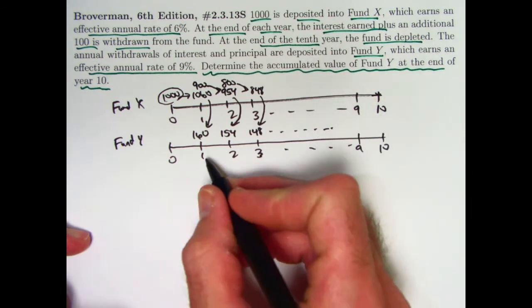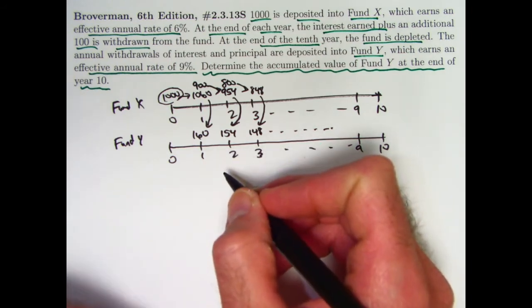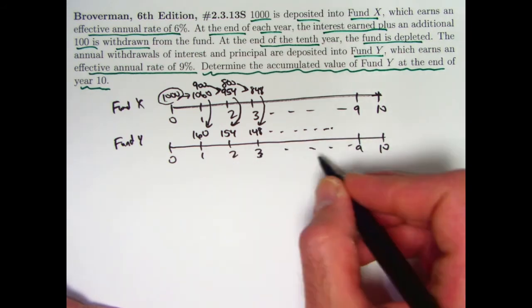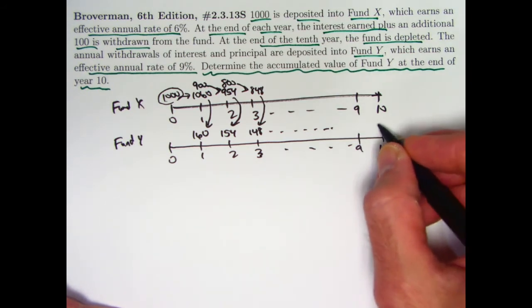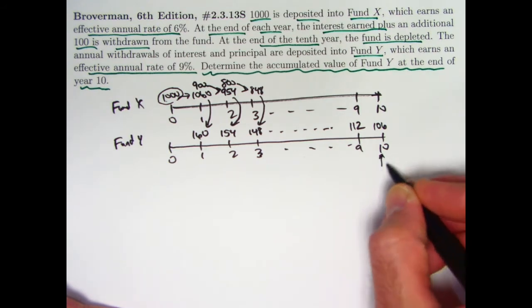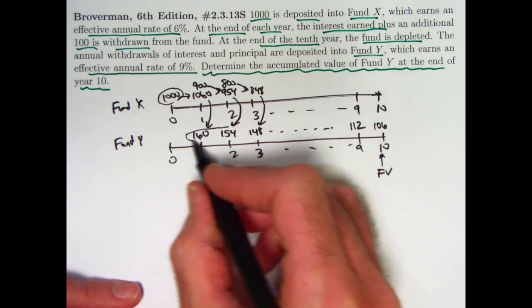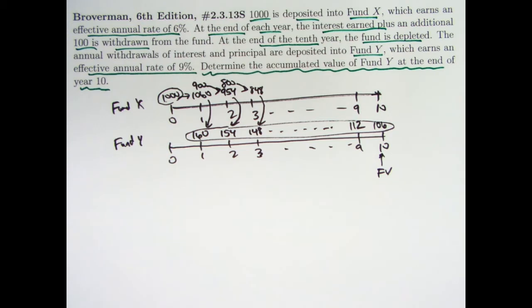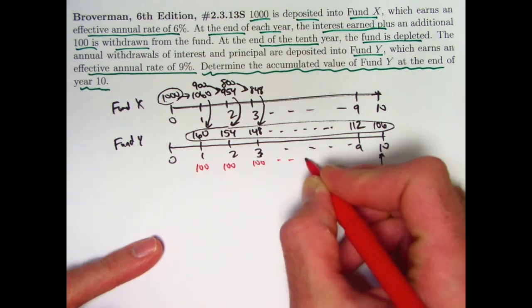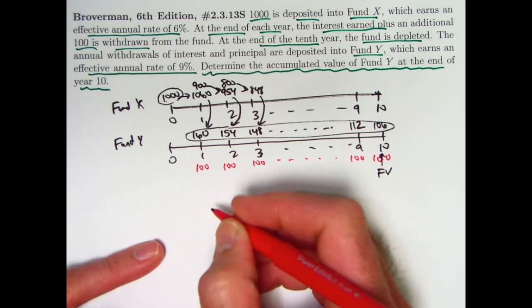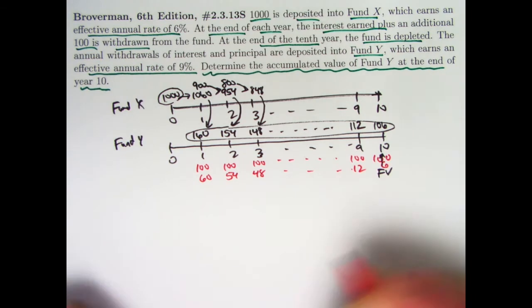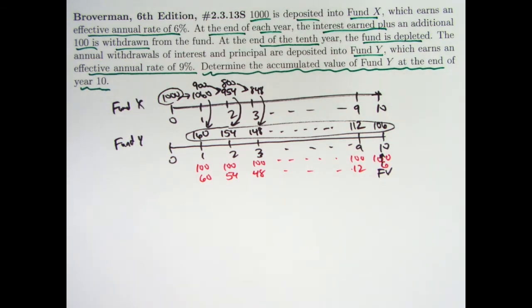Let's focus on fund Y now. For every year that goes by, the amount deposited into fund Y goes down by six — it's an arithmetically decreasing sequence. There are nine years elapsed from time one to time ten. Nine times six is 54, so the final deposit into fund Y at time ten is going to be 106, and the second to last would be 112. It's the future value of this decreasing annuity that we want to find. It's helpful to break this into two pieces: one is a constant level annuity of payments 100, and one that's a decreasing annuity where every payment is a multiple of six — making this second annuity six times the most basic kind of decreasing annuity.